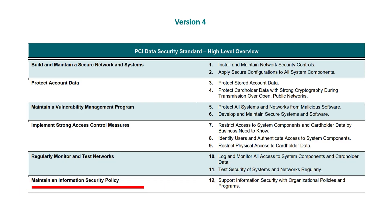Finally, Domain 6: Maintain an Information Security Policy. Within this domain we have Requirement 12: Support information security with organizational policies and programs. As you can already tell, the names of some requirements are slightly different; however, the intent is very similar — almost the same. That's why it's important to review version 3.2.1 before jumping to version 4, because version 4 is a continuation, not a completely new standard.